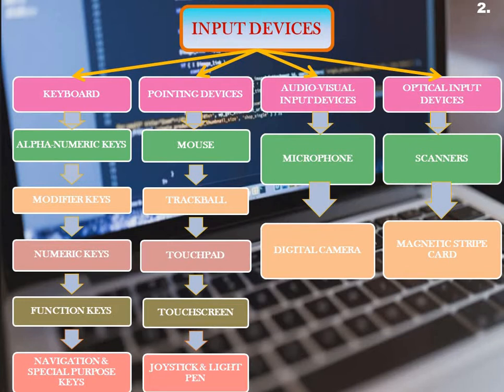The types of pointing devices are: mouse, joystick, trackball, touch screen, touchpad, and light pen. Today we will discuss the first main pointing device — the mouse. The mouse is the most commonly used pointing input device in a Windows-based computer. It is used to control the cursor or pointer on the screen and to give commands to the computer by clicking some option.